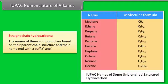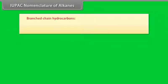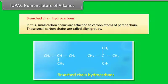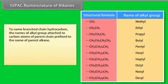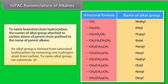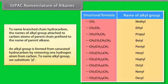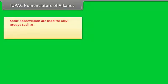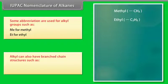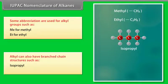IUPAC nomenclature of alkanes. For straight-chain hydrocarbons, names are based on the parent chain structure and end with the suffix -ane. For branched-chain hydrocarbons, small carbon chains are attached to the parent chain and are called alkyl groups. The names of the alkyl groups are prefixed to the parent alkane name. An alkyl group is formed from a saturated hydrocarbon by removing one hydrogen atom. Alkyl groups can also have branched structures such as isopropyl and tert-butyl.